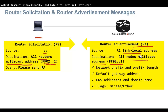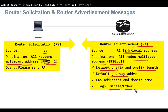The Router Advertisement message, which we covered in chapter 10, contains the network prefix and prefix length, the default gateway (itself), DNS address, and domain name. It also includes the Managed and Other flags, which tell the PC how to configure its IPv6 address.